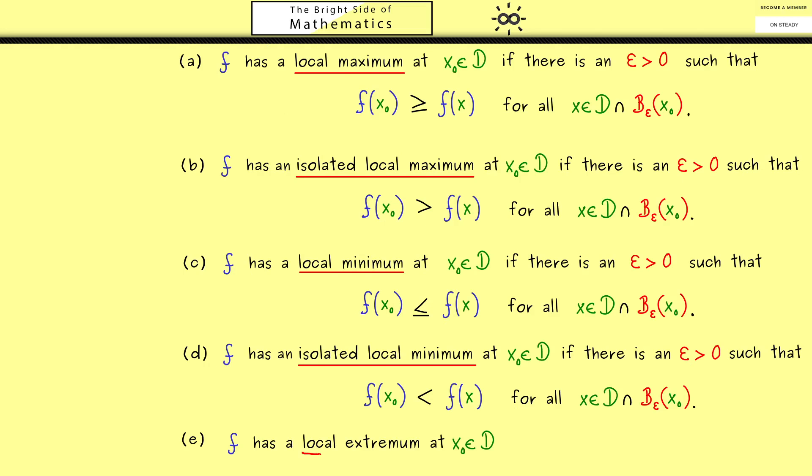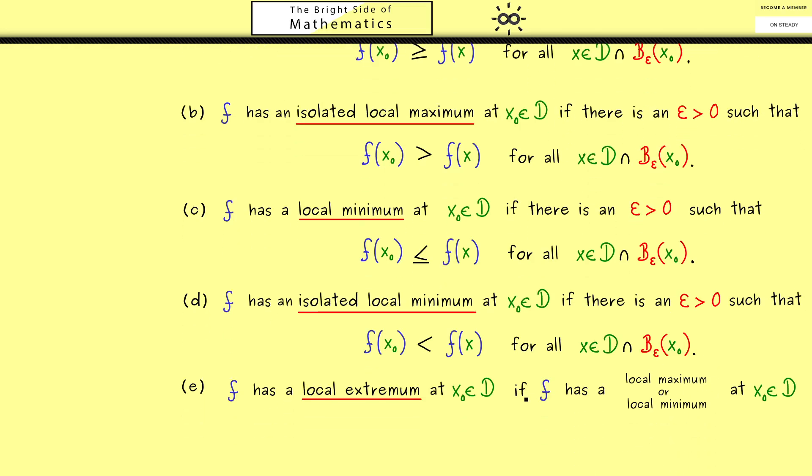With all of that, now we should also know what a local extremum is. Namely, we would say that f has a local extremum at x_0 if it has a local minimum or a local maximum. Therefore, you should see this is not a complicated definition at all. In other words, the term local extrema just puts local maxima and local minima into the same box.